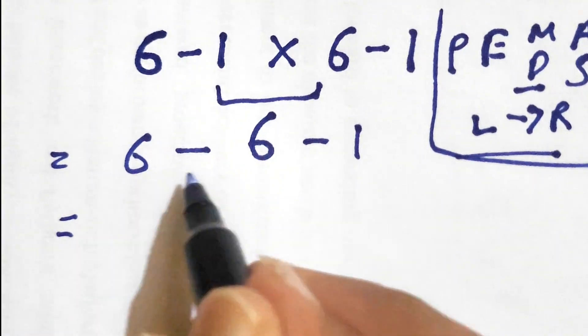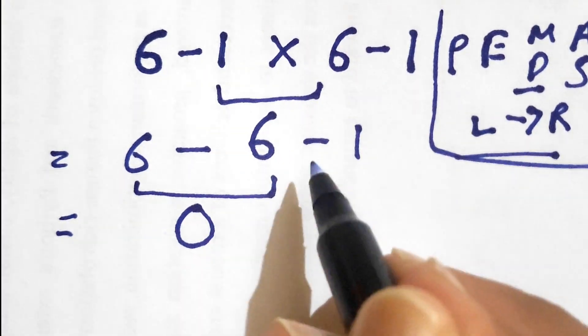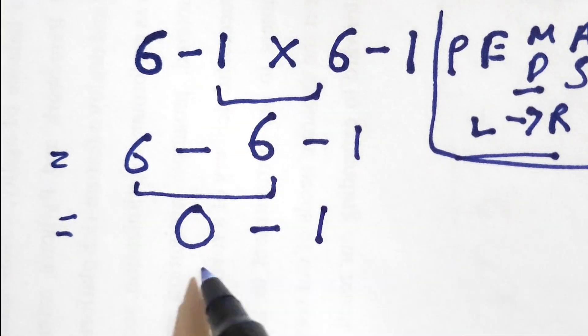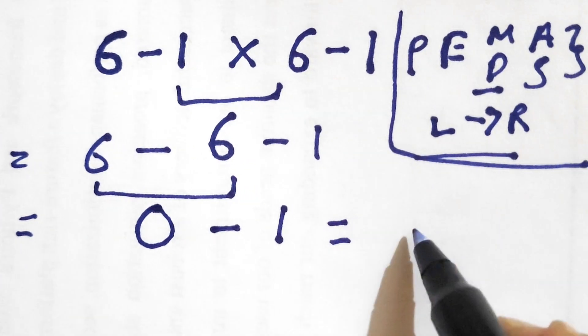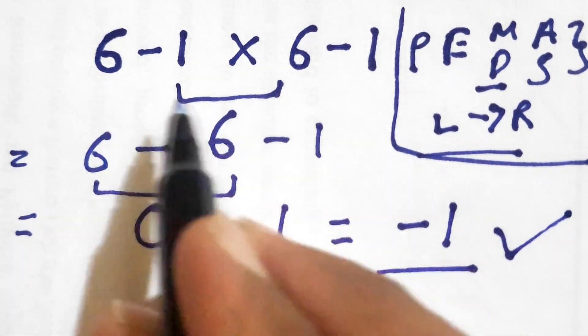So we need to solve this 6 minus 6, that gives 0, and then we have 0 minus 1. So 0 minus 1 gives us simply minus 1. This is the final correct answer for this expression.